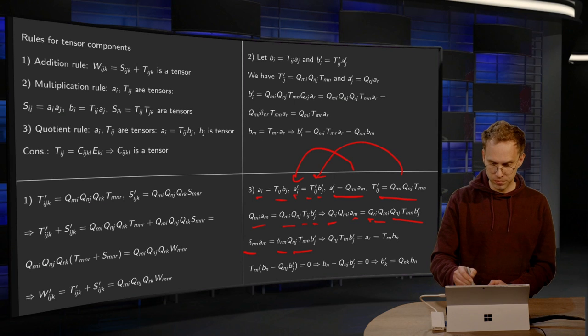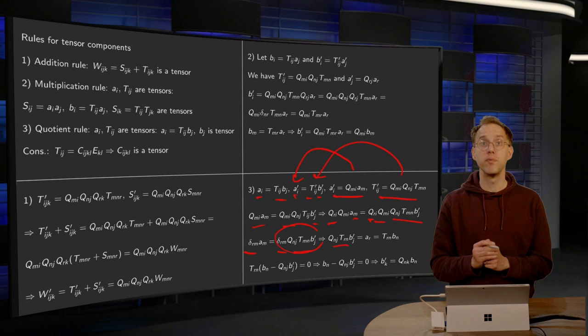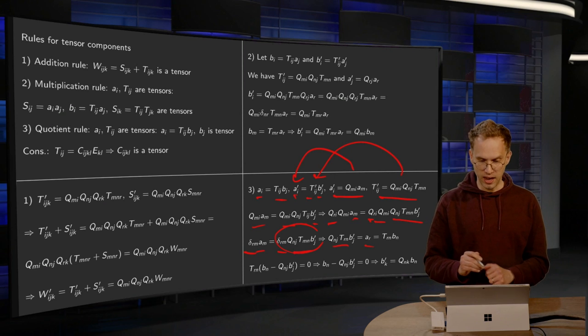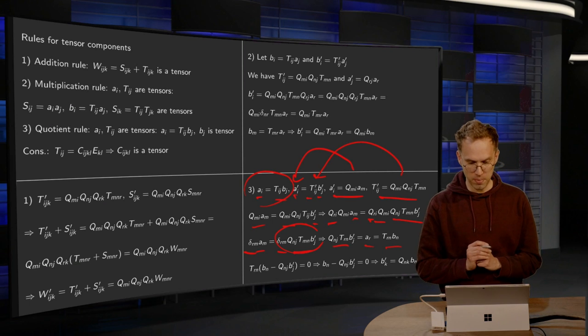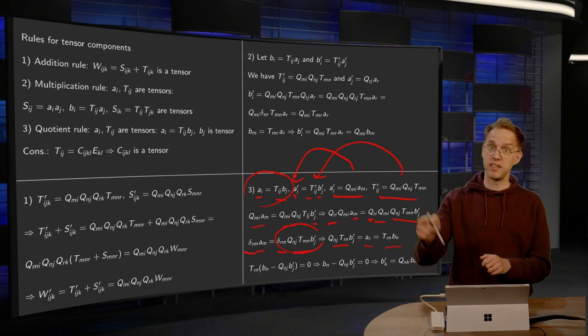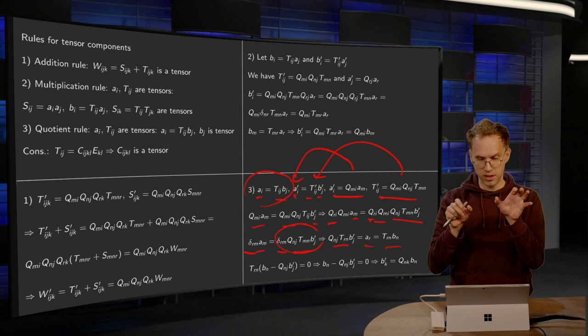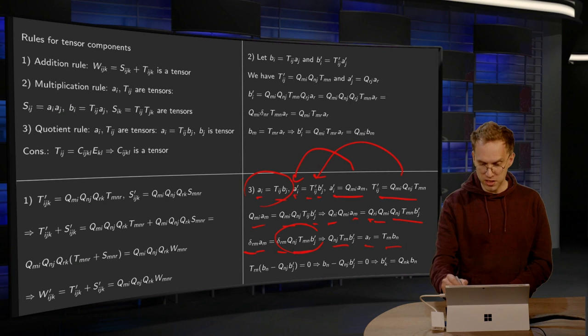And then you see that we are left with, this term becomes Qnj, TrN and bj prime, performing the sum over the n. And the left hand side just gives you, of course, the Ar. And the Ar, again, using this over here, is equal to TrN bn. Now we are almost there. We take the TrN bn to the left hand side. So we get Qnj TrN bj prime minus TrN bn equals zero. And then we have this TrN. They both have it, so you can take it out.